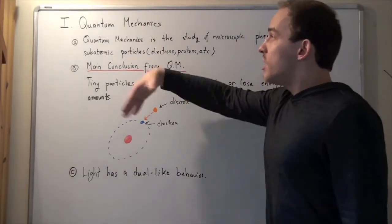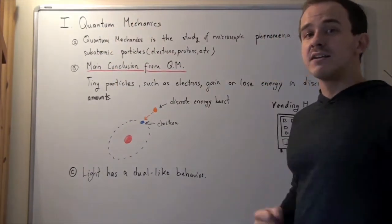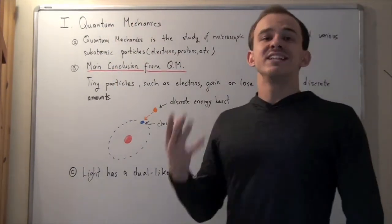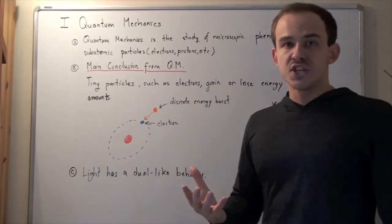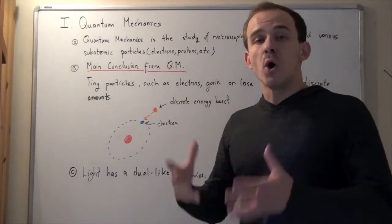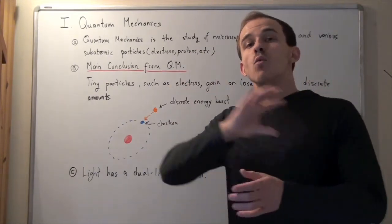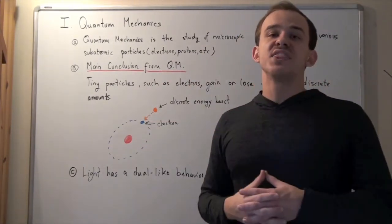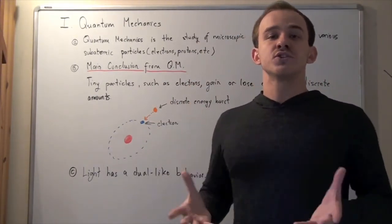Now, one other result from quantum mechanics is the following. Electromagnetic waves such as light waves have dual natures. In other words, they can act as both a particle and as a wave. And we'll talk more about that when we talk about the photoelectric effect.